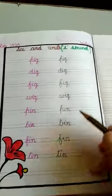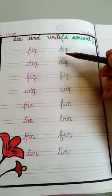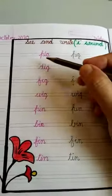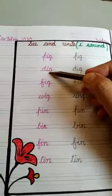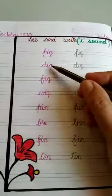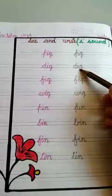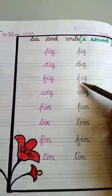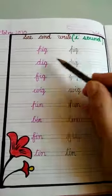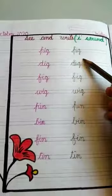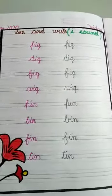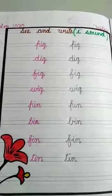So, in this way you have to do today's I sound words. Here mama will write and you have to see and write here. Okay. And don't forget the reading of the I sound words. Okay children, bye-bye.